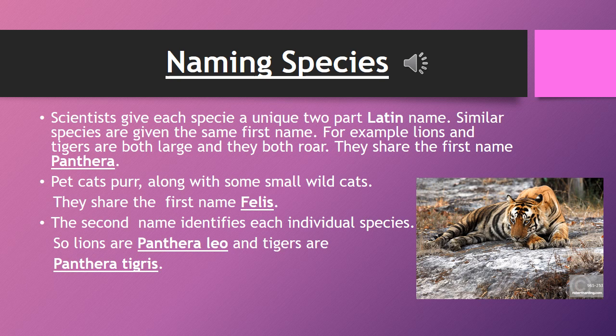Naming species. Scientific names are also designed to tell you something about the animal's relationship with other animals. Scientists give each species a unique two-part Latin name. Similar species are given the same first name. For example, lion and tiger are both large and they both growl. They share the first name Panthera, along with some small wild cats that share the first name Felis.